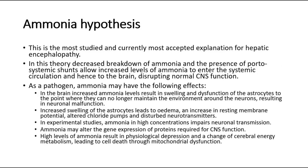The ammonia hypothesis is the most studied and currently most accepted explanation for hepatic encephalopathy. In this theory, decreased breakdown of ammonia and the presence of portosystemic shunts allow increased levels of ammonia to enter the systemic circulation, and hence to the brain, disrupting normal CNS function. As a pathogen, ammonia may have the following effects.